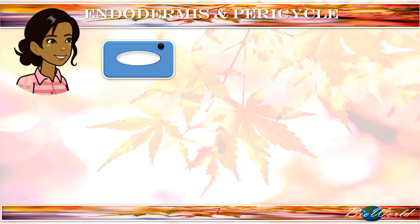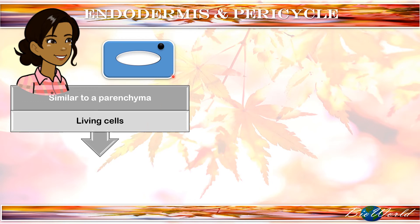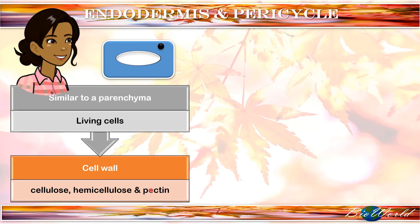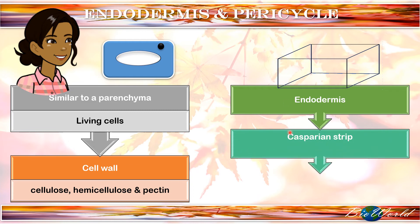The structure of the pericycle and endodermis is similar to a parenchyma cell. There is the cytoplasm, the nucleus as well as the vacuole, indicating that pericycle and endodermis are both living cells. They have a thin cell wall made up of cellulose, hemicellulose and pectin. However, the endodermis cell is slightly modified, where we find that the cell wall of the endodermis has a casparian strip.